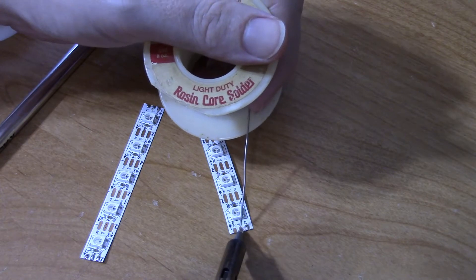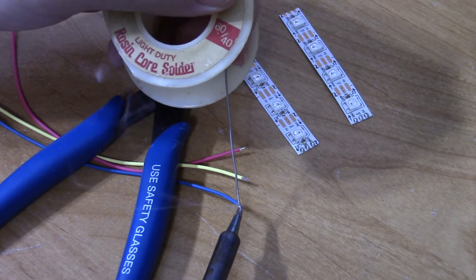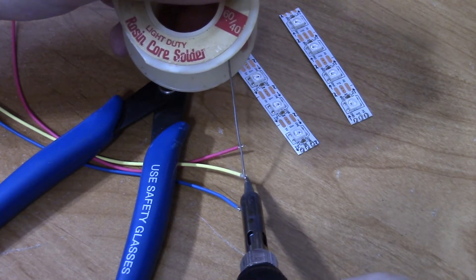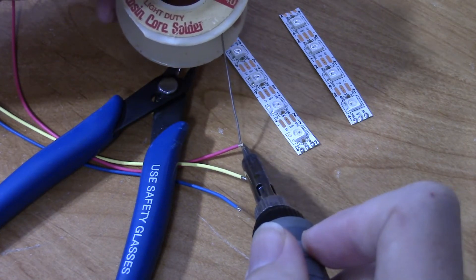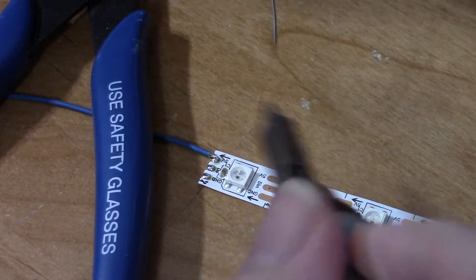Begin by tinning all of the RGB strip leads. Then you need to tin all of the wire leads that will connect to the RGB strips. Solder your wire leads to your RGB strips.